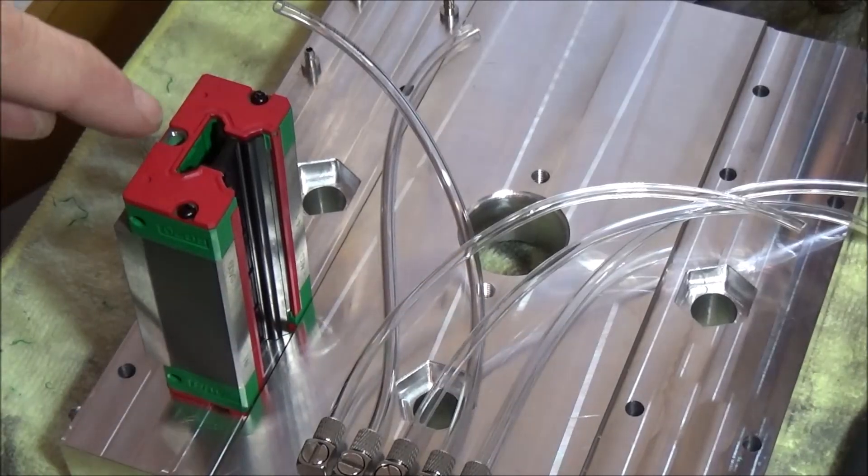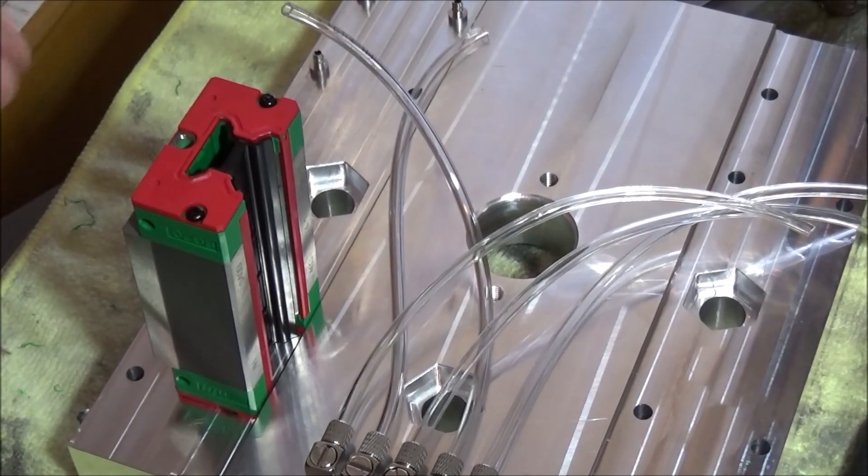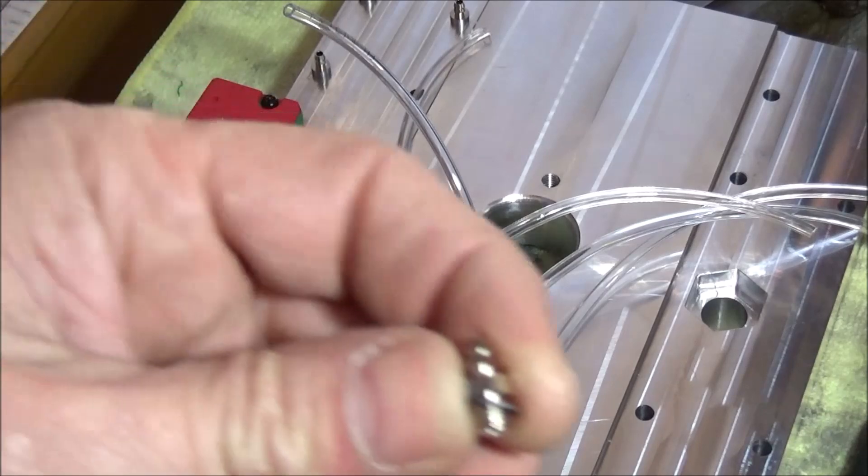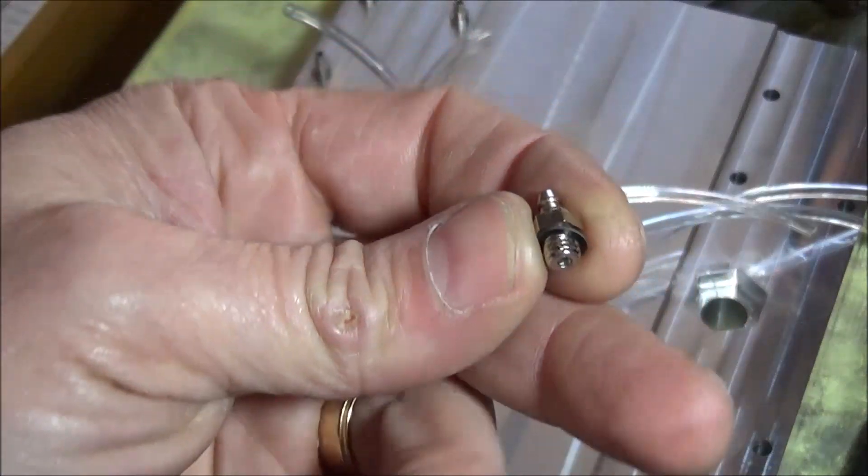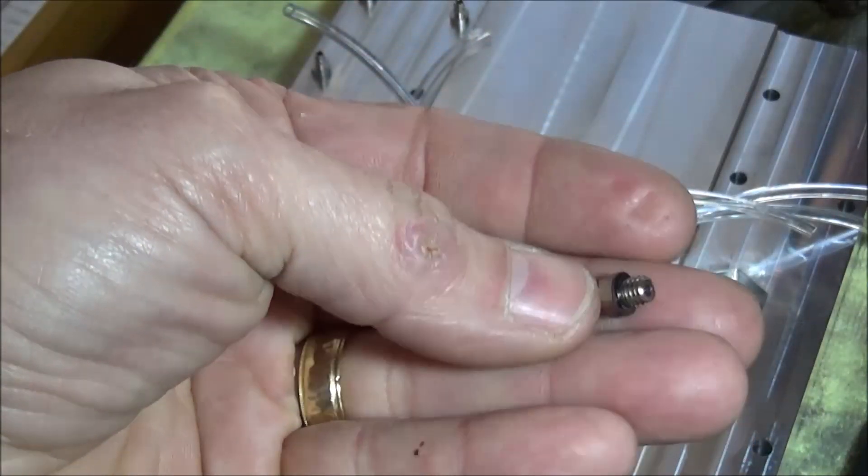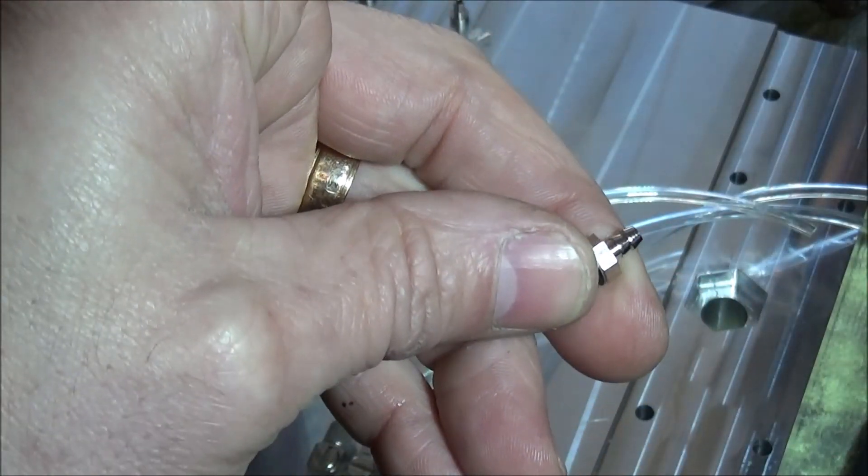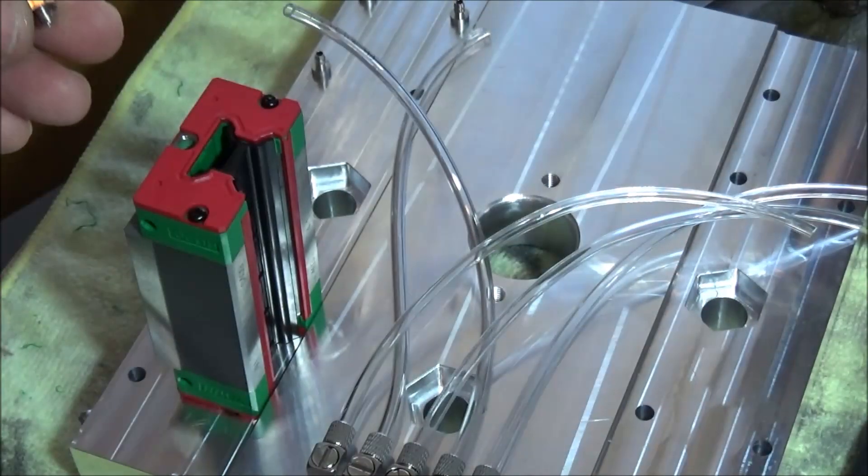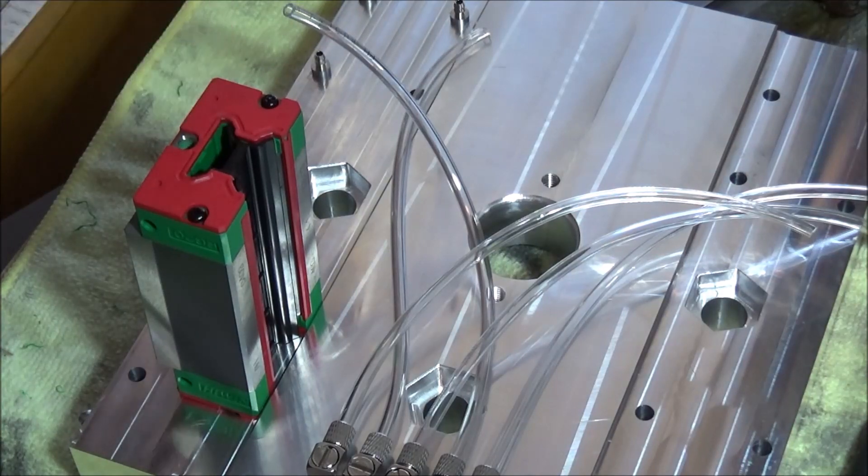Okay guys, so I've pulled the little set screw out right here, this is where the oil fitting is going to be. I'm using these little M5 barbed fittings and I'm just going to screw it in here now.